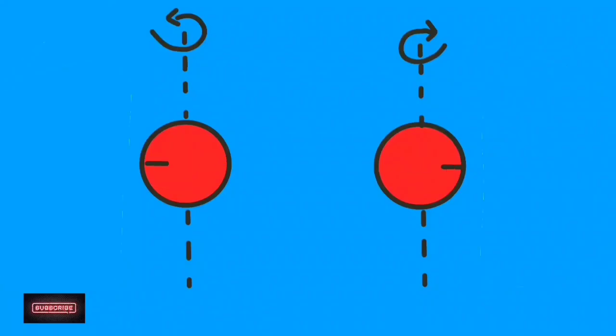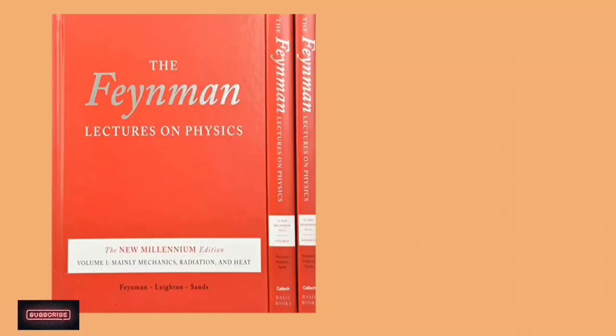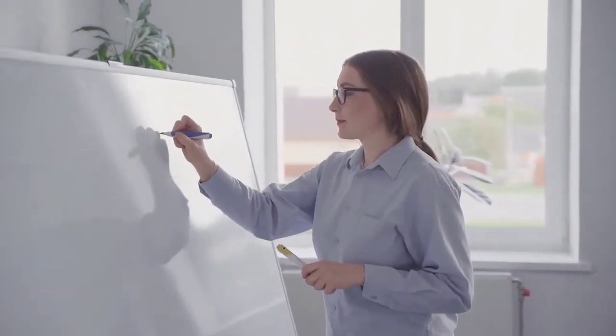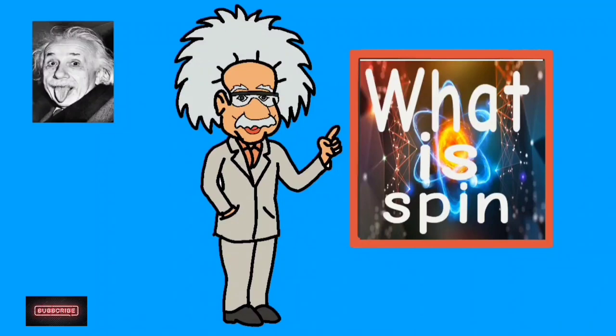My chemistry teacher kept talking about electron spin—spin up, spin down, spin half, this and that. But as I started reading Feynman lectures, I realized that it's impossible for electrons to ever spin. So stay with me until the end of the video and you will get a profound idea about the spin of electrons.